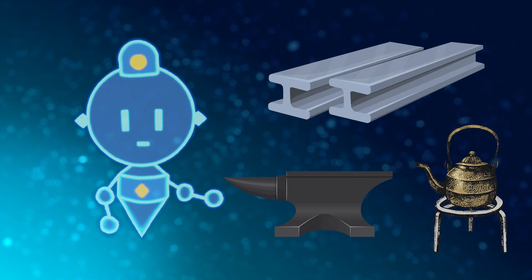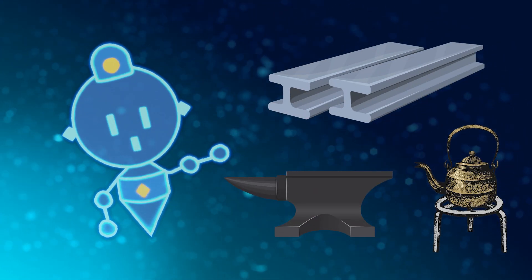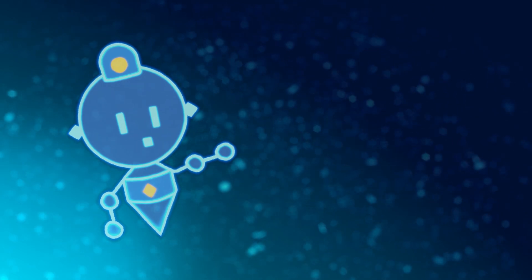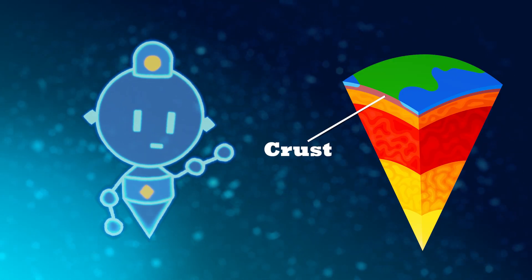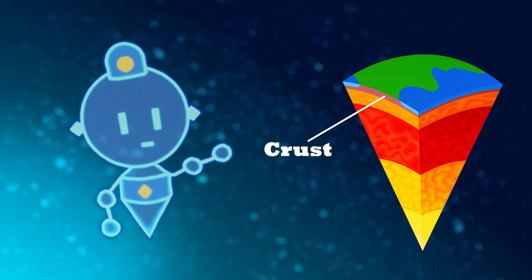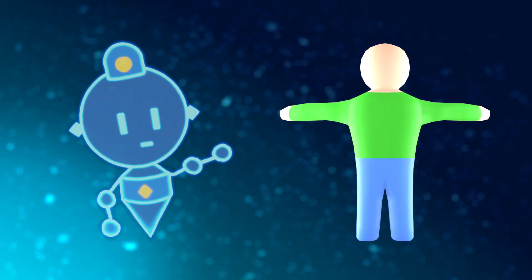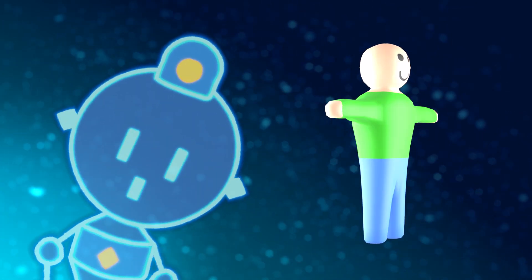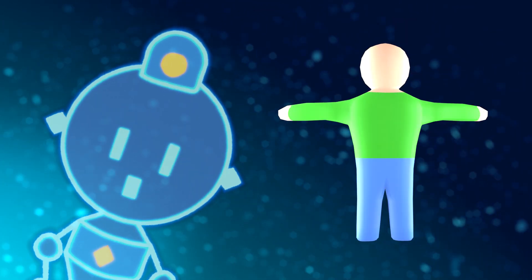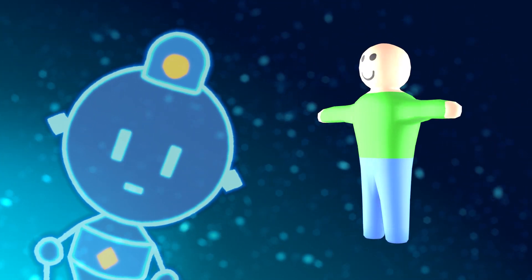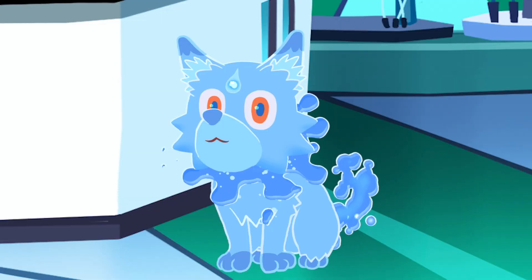Iron is, by mass, the most common element on Earth. It can be found in the Earth's crust, in water, and even in your human body. About three to four grams of iron are flowing through your bodies right now. Neat, right?